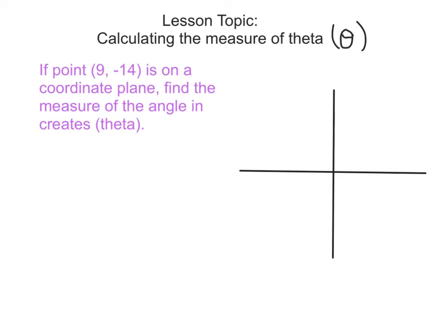Here is the culminating question for this unit. If the point (9, negative 14) is on a coordinate plane, find the measure of the angle it creates, which we'll call theta. Let's start by plotting this point (9, negative 14).